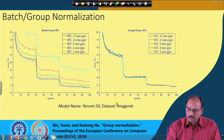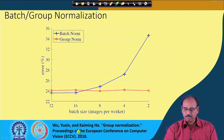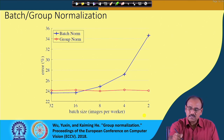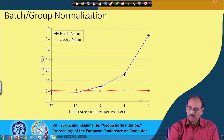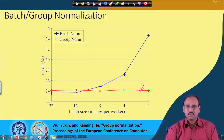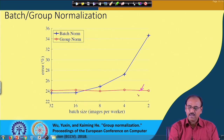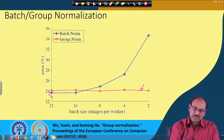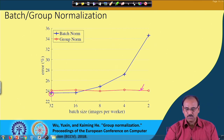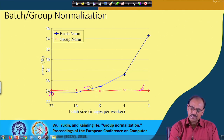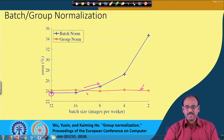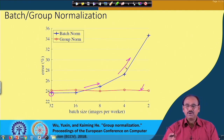This is also shown with another plot: as batch size varies, group normalization (the red plot) maintains roughly the same error regardless of batch size. Batch normalization performs better than group normalization when batch size is large (around 32), but as batch size decreases, batch normalization's performance becomes worse than group normalization and continues to degrade further.